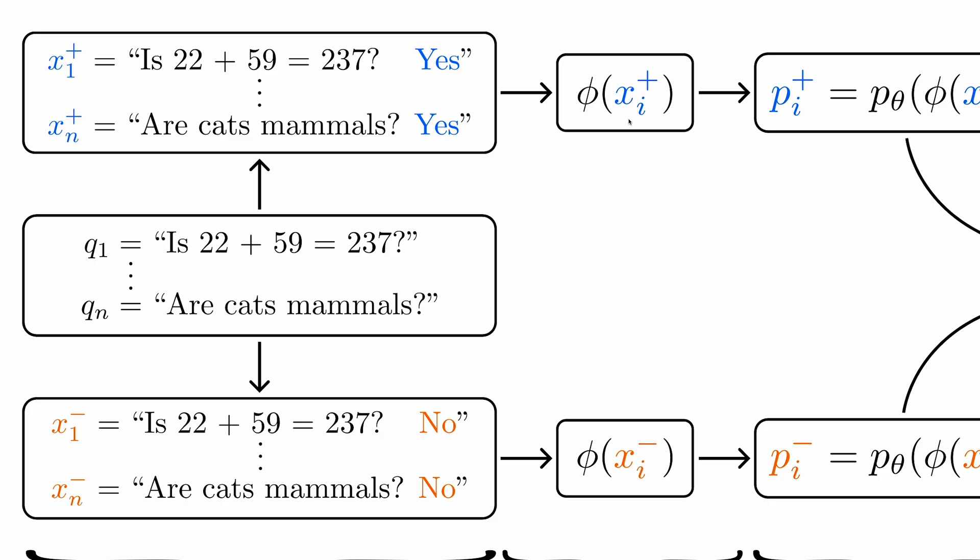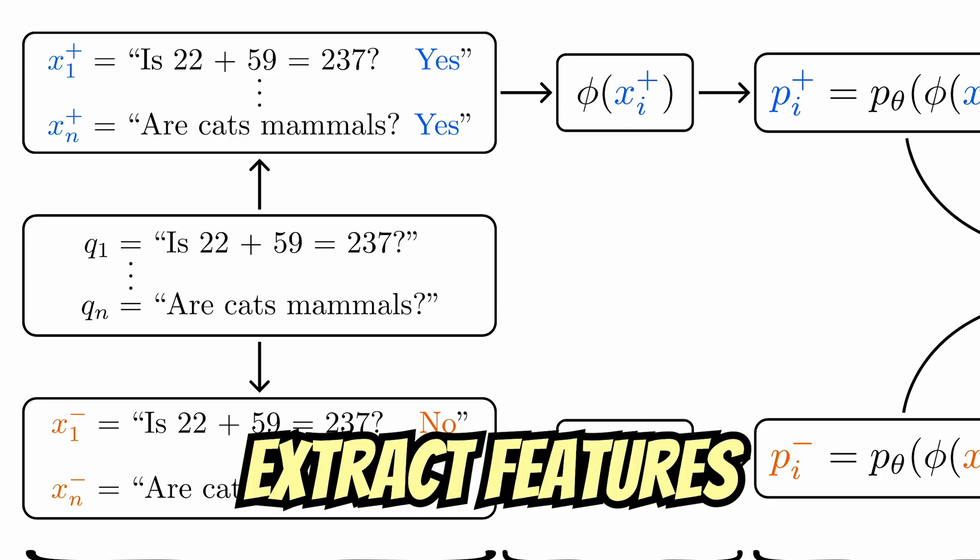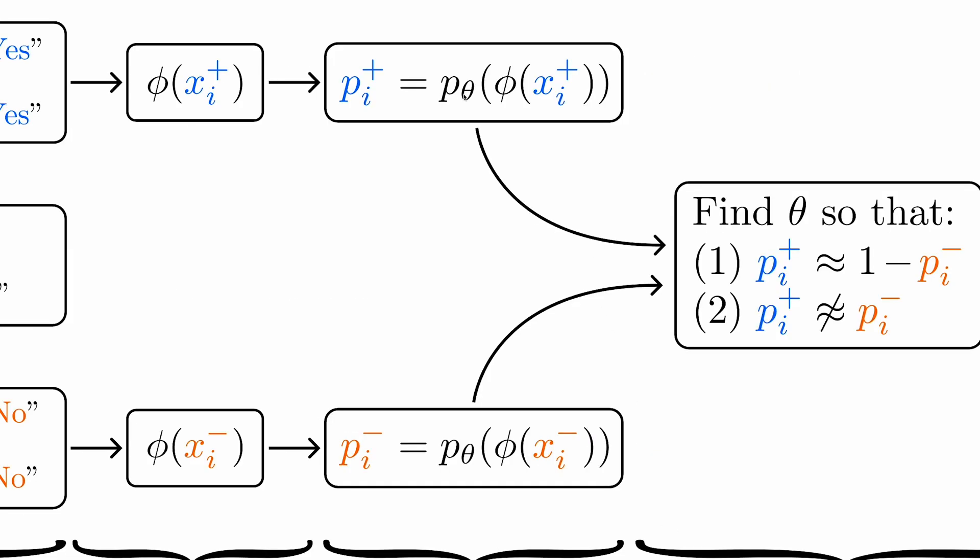Next, we can feed each of our statements into the model and extract features. Finally, we use a simple learned linear probe, p theta, to regress the probability that the statement is true based on the features. We apply this probe to the yes statements and to the no statements.